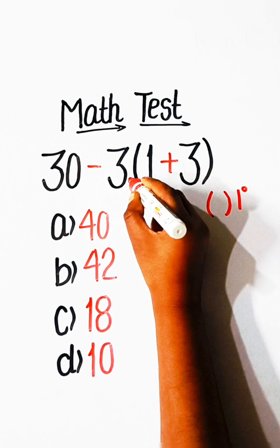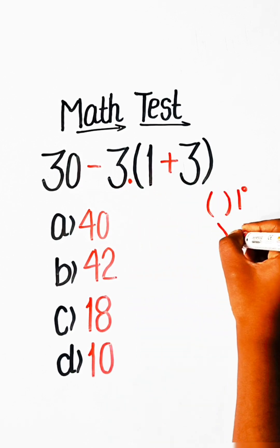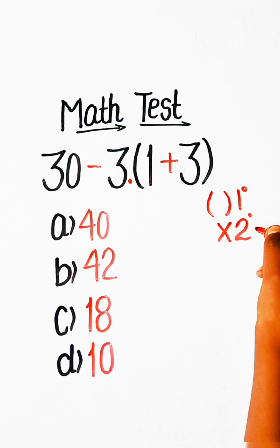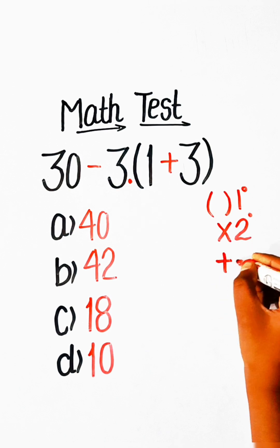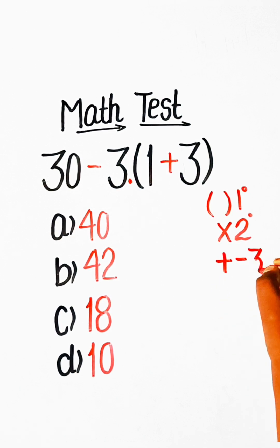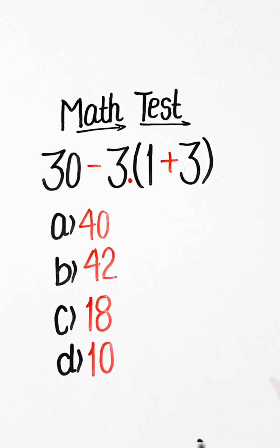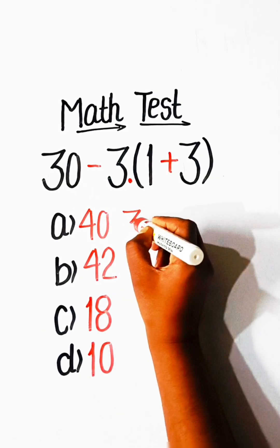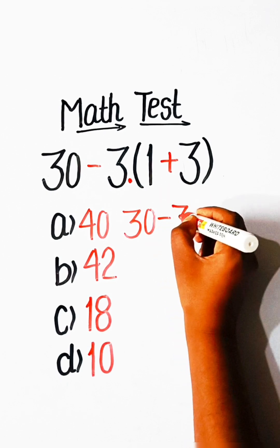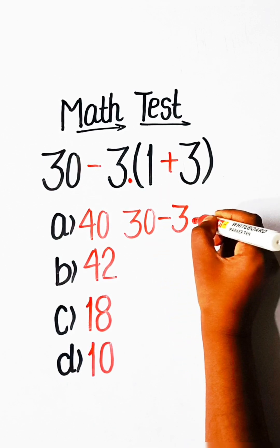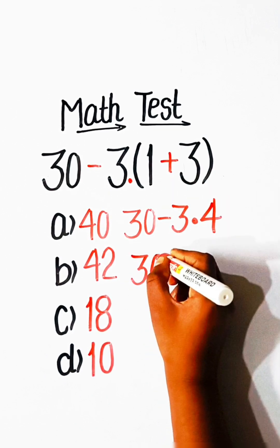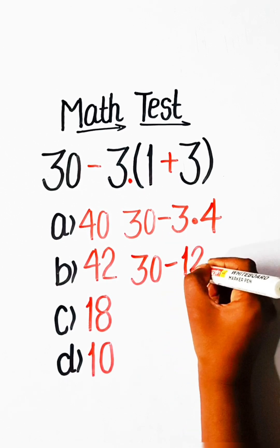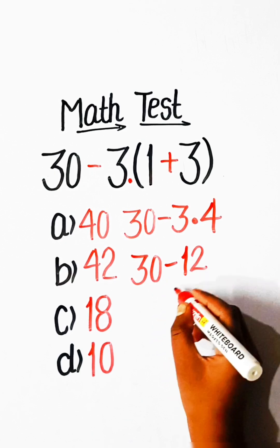Second priority is multiplication, and third priority is minus and plus. So let's solve this: 30 minus 3 multiplied by (1 plus 3 is 4), so we write 30 minus 3 fours are 12, and 30 minus 12 is 18.